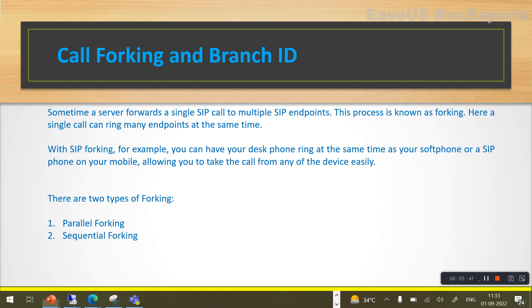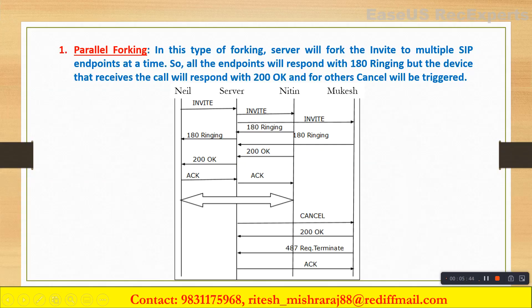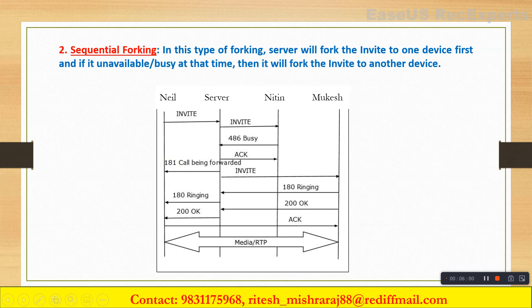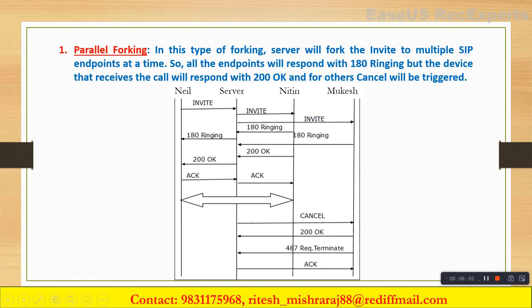Looking at the call flow for parallel forking: all the endpoints start ringing at the same time. The server sends the invite to both endpoints — Nitin and Mukesh. Both Nitin and Mukesh respond to the server with 180 Ringing. But only the party who accepts the call first — here Nitin accepts first — sends a 200 OK to the server, which gets forwarded to the calling party and media is established. For Mukesh, a CANCEL is generated by the server and the call is terminated. This is parallel forking.